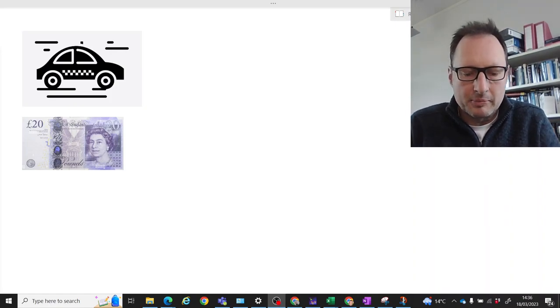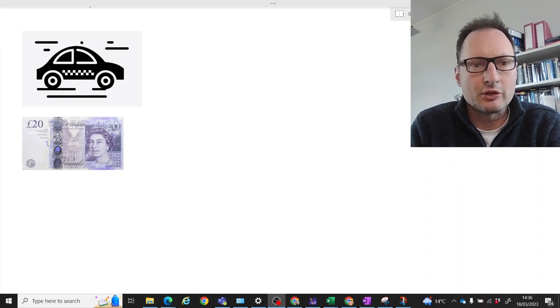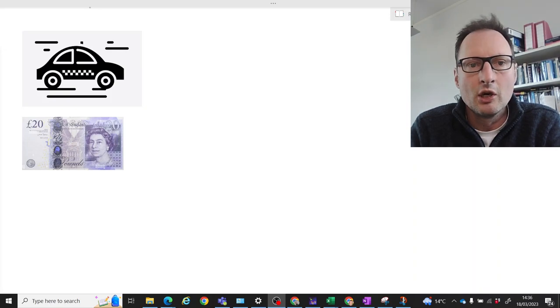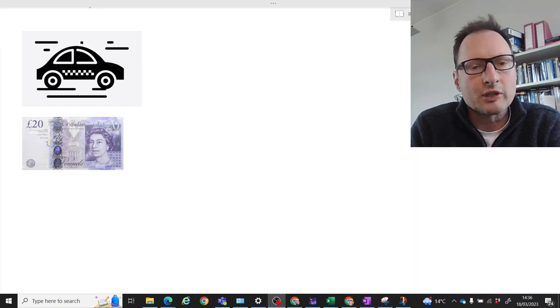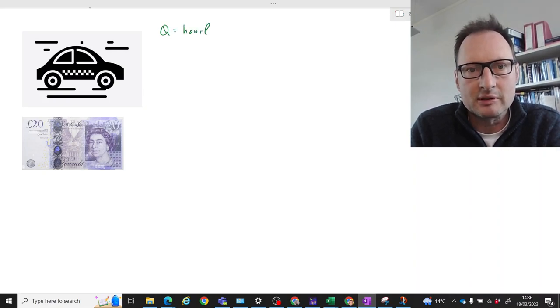So here we are working an example of hypothesis testing for a two-sided alternative. We have a taxi entrepreneur who basically rents out his taxis to several drivers, and what he's worried about is that random variable q which tells us what the hourly earnings are of his taxi drivers.